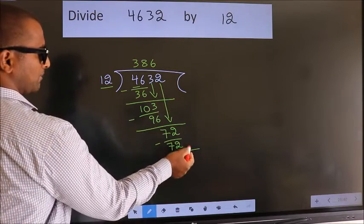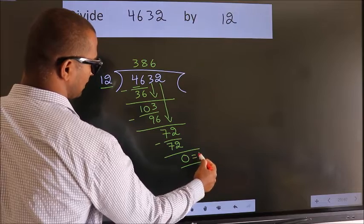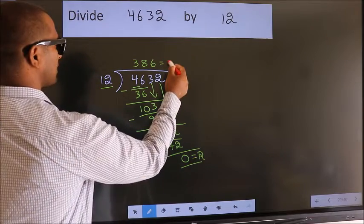No more numbers to bring down. So we stop here. This is our remainder. This is our quotient.